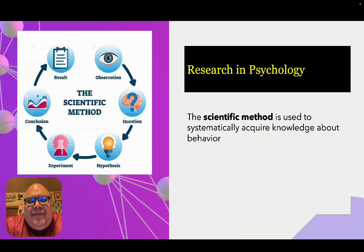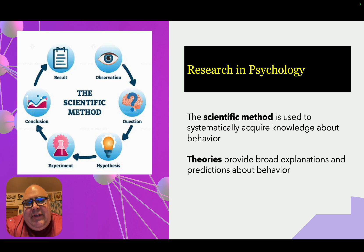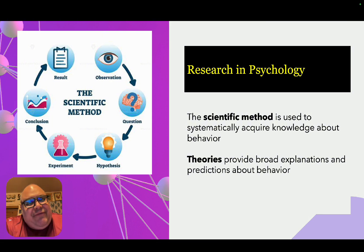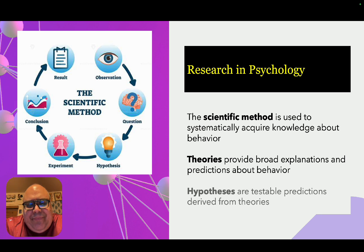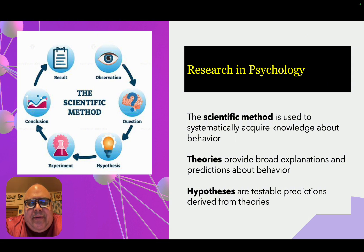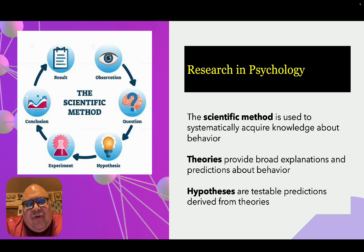The kind of research that a chemist, physicist, or biologist does can look very different from the kind of research done by a psychologist, but these are still examples of the scientific method. The goal of the scientific method is to eventually, over time, after a lot of research and findings, help us develop theories — which provide broad explanations and allow us to make predictions about human behavior. Hypotheses are the stepping stones that take us to these theories, because every cycle of the scientific method is based on one or more hypotheses.